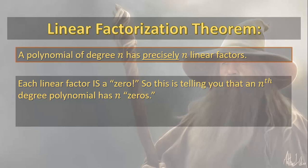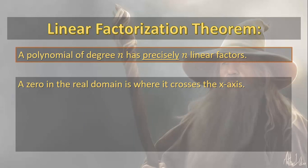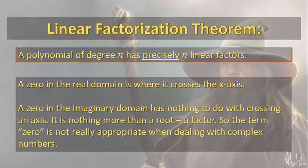So why do I have quotation marks around the zeros? Because a zero in the real domain is where it crosses the x-axis. But a zero in the imaginary domain has nothing to do with crossing an axis. It's nothing more than a root or a factor. So for that reason, the term zero is not entirely appropriate when dealing with complex numbers.